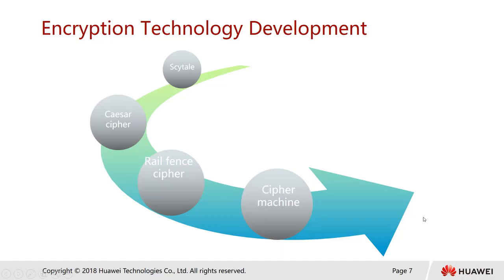Let's look at encryption technology development. First, we have the Scytale. The Scytale is a tool, or baton, used to perform transposition cipher. It consists of a cylinder with a strip of parchment wound around it on which a message is written. In ancient Greece, particularly the Spartans, it is said to have been used to communicate during military campaigns.